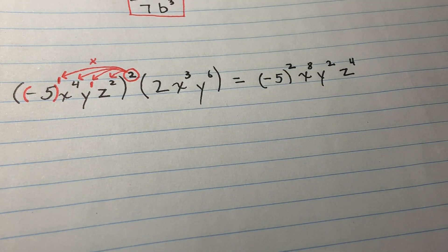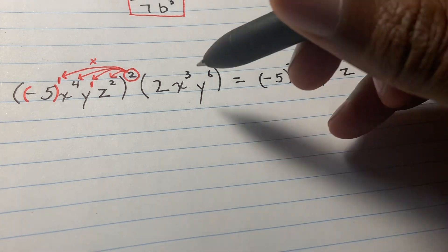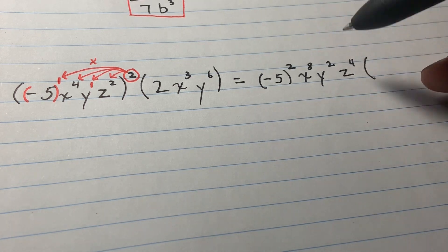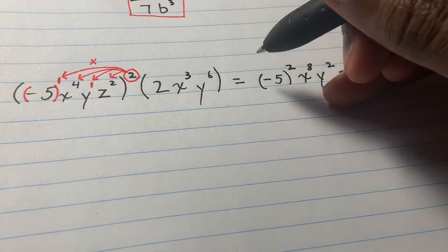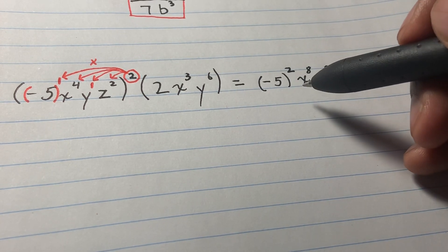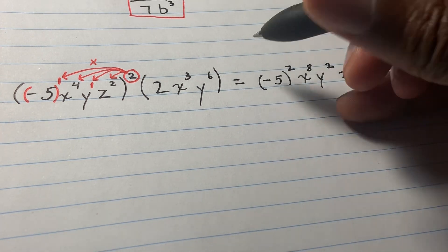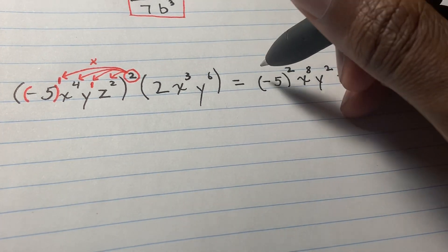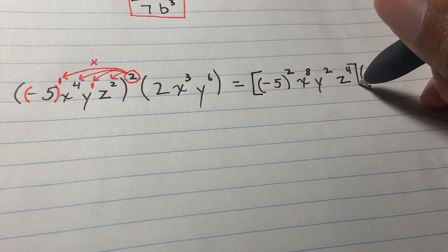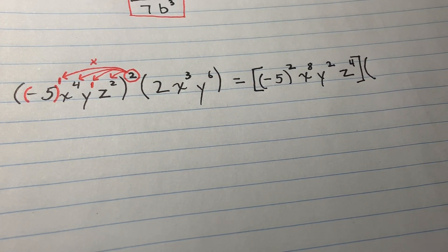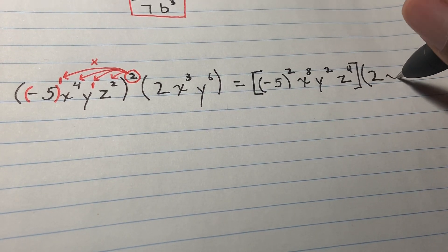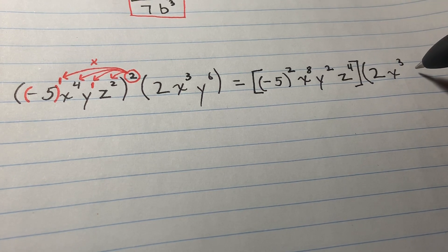Do I distribute the exponent to the right side? No. We keep the right side the same. You can put brackets around the right side if the double parentheses confuse you — brackets and parentheses are essentially the same thing here.